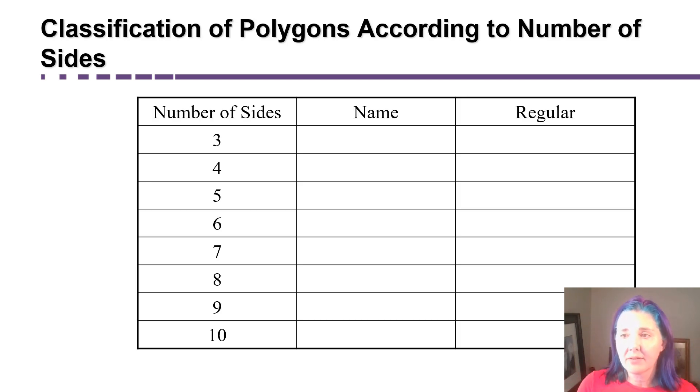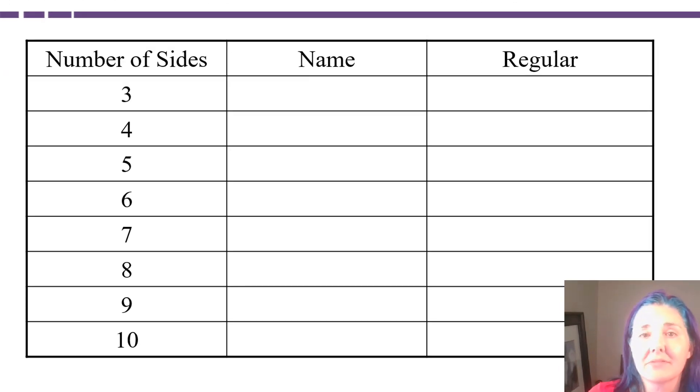One way to classify polygons is according to the number of sides. You're probably familiar with most of these terms. A three-sided polygon, for example, you probably know is called a triangle. Now, a four-sided polygon, the general category is called quadrilaterals. We're going to talk about different types of quadrilaterals in more detail, but quad, the prefix quad means four, so four-sided polygon is called a quadrilateral.